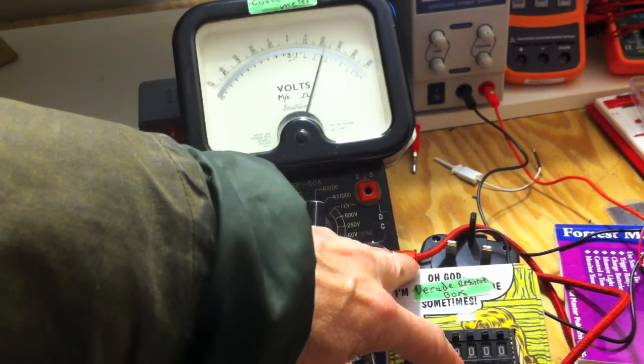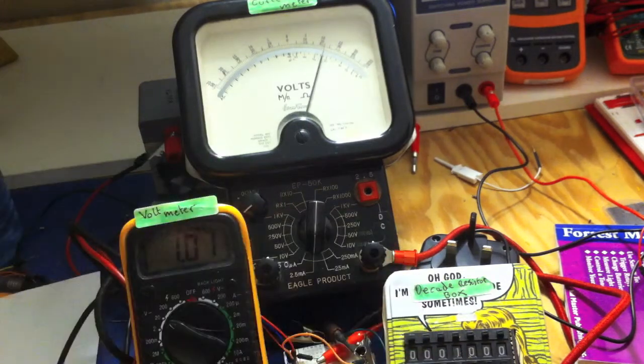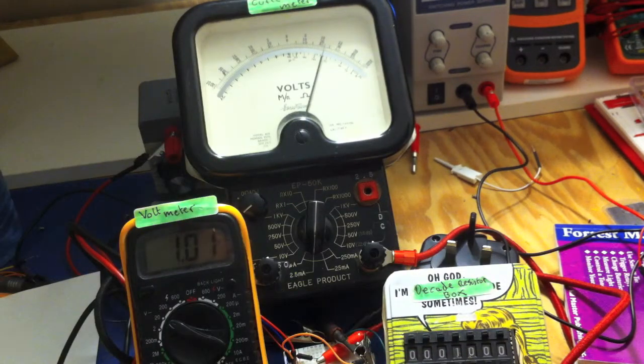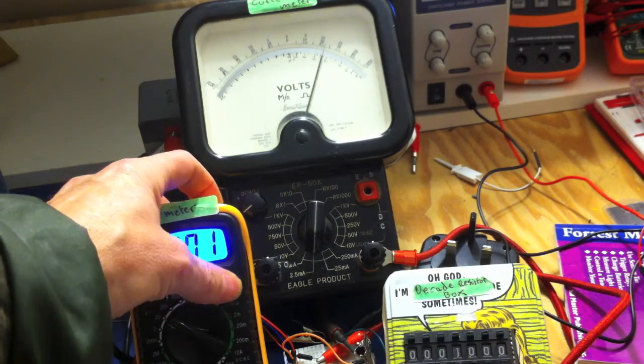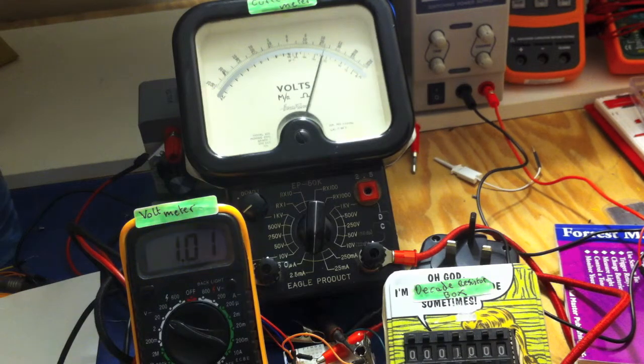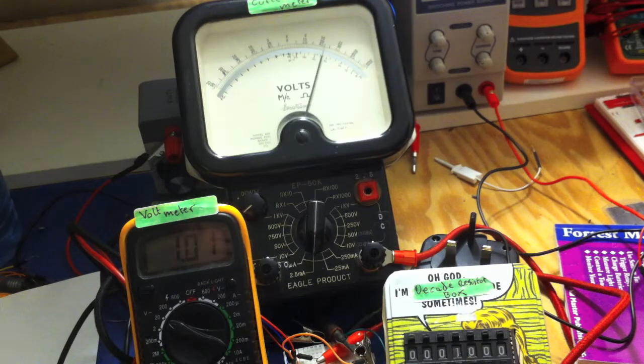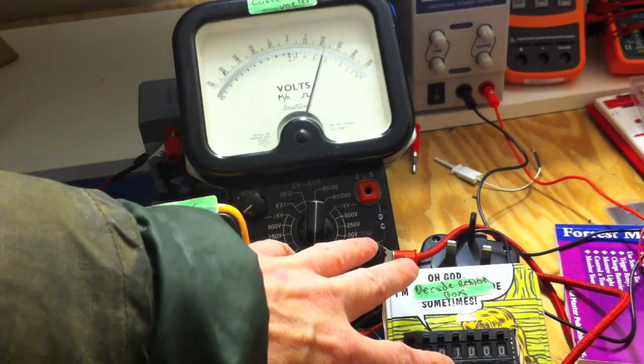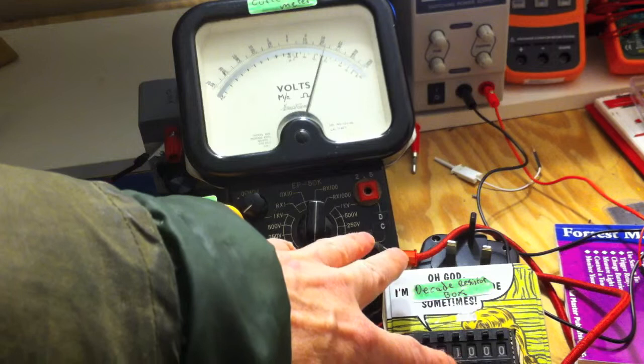So we'll start off with 1,000, keeping an eye on the current meter and the voltmeter. So there's 1,000. You'll notice the needle flickered slightly there on the current meter, but there's no real change. It's still at 1.2 milliamps and the voltage displayed is 1.01 volts. So that's our initial setup, we've got a fixed current coming through there of 1.2 milliamps. I'm going to now increase the resistance to 2,000 ohms and let's see if the current still remains fixed at 1.2 milliamps.